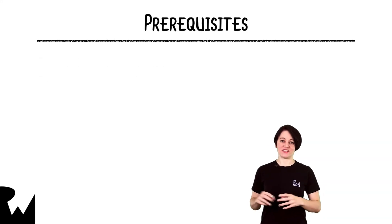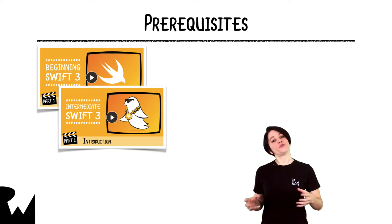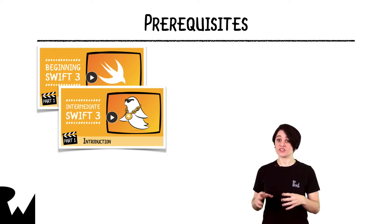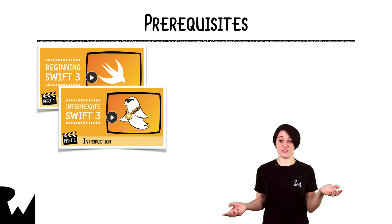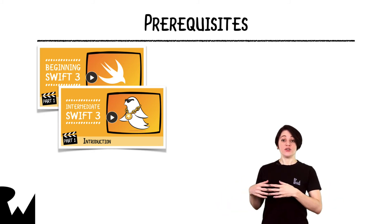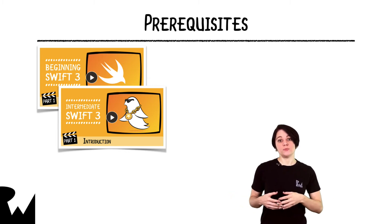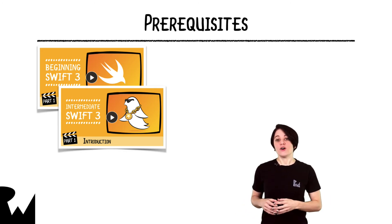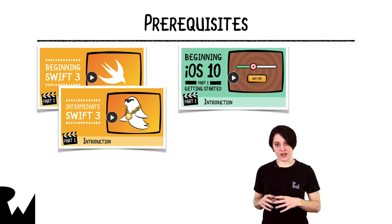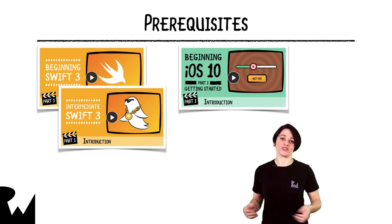Before embarking upon your data-saving journey in this course, you should have a good understanding of the Swift programming language. Feel free to continue on past this introduction video, but if you feel lost, we've got courses on Swift that might help you out. When you're comfortable with the material in the beginning Swift and intermediate Swift courses, you should be ready to tackle this one. For the last video on user defaults, you'll move from a Swift playground to an Xcode project that'll run in the iOS simulator. For that, it'll help to have some basic familiarity working with such projects. Going through the beginning iOS getting started course should probably be enough.